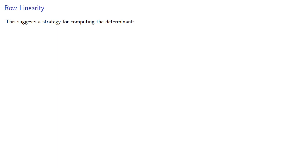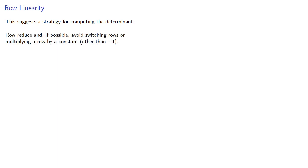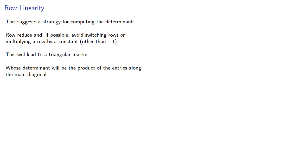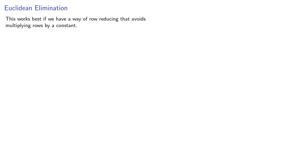This suggests a strategy for computing the determinant: row reduce, and if possible, avoid switching rows or multiplying a row by a constant other than negative one. This will lead to a triangular matrix whose determinant is the product of the entries along the main diagonal. This approach works best if we have a way of row reducing that avoids multiplying rows by a constant, so we'll use Euclidean elimination.